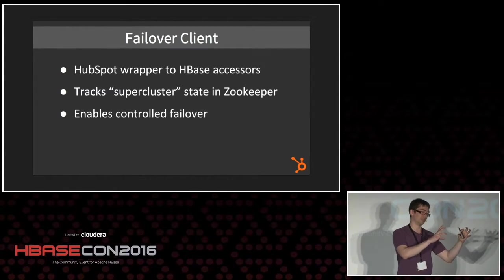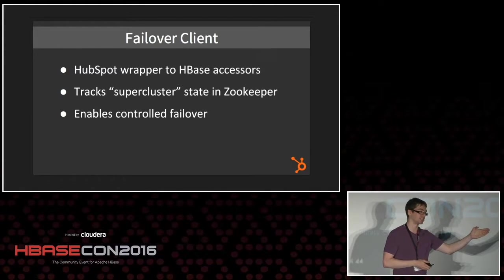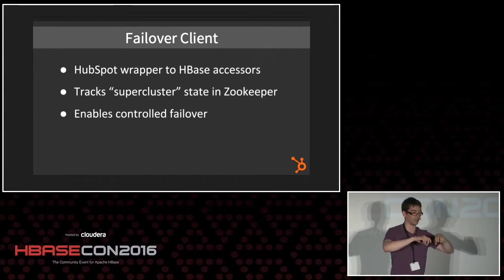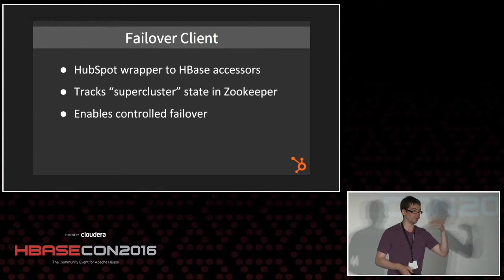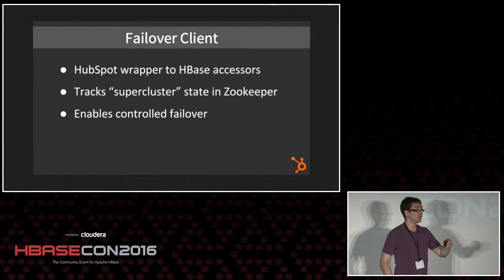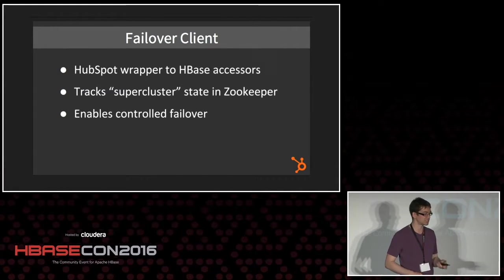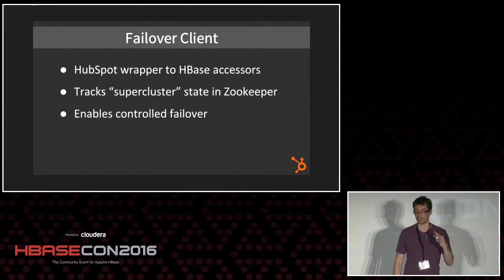We have a configuration in ZooKeeper that, as far as clients are concerned, presents as just one cluster — a super cluster. But in ZooKeeper it's actually two separate HBase clusters: cluster 1A and cluster 1B, each with a flag for whether it's read-only. Clients watch that ZooKeeper node, and as soon as it changes — because there's a ZooKeeper watcher — the information propagates to clients, they stop sending write requests, and they fail over. This also makes configuration failovers easy: just change what's in ZooKeeper.